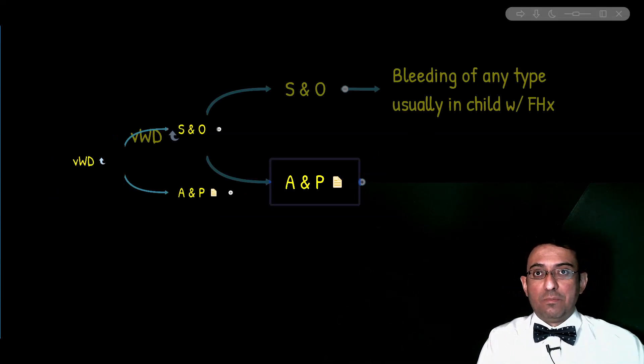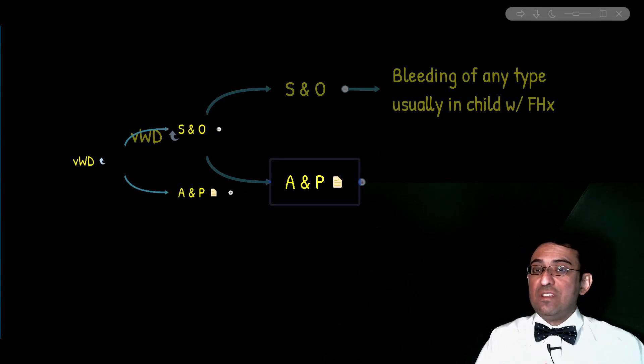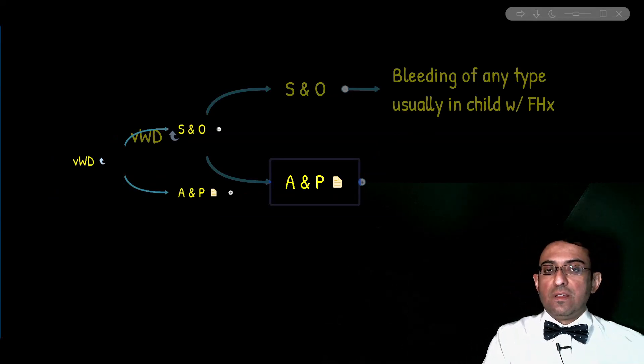On the other side, we have the abnormality secondary to decreased function of factor VIII, and that is prolongation of activated partial thromboplastin time of the intrinsic pathway. However, the measure index of the extrinsic pathway, the prothrombin time, is normal. These are the first tests.